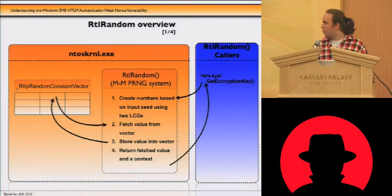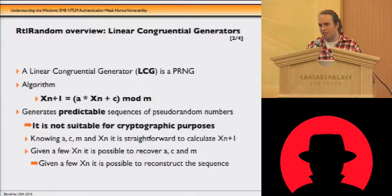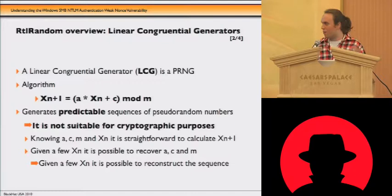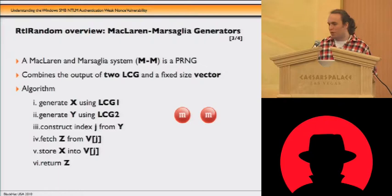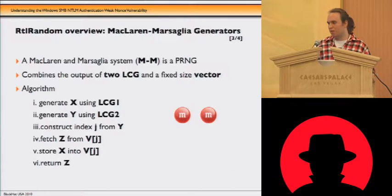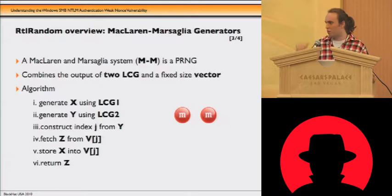The MNM system uses two LCGs — linear congruential generators. These functions are good for statistical randomness and for simulation, but they are not suitable for cryptographic purposes because they generate a predictable sequence of numbers. The MNM system is the form of the RTLRandom algorithm for creating the sequence of numbers. It was proposed around 1956, and the authors wanted to improve the randomness in statistical means of the LCGs.